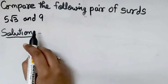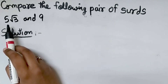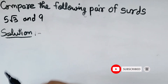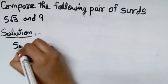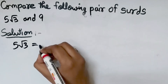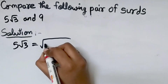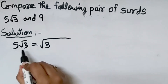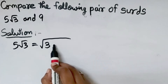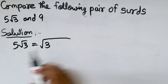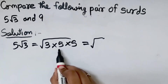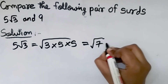Now compare 5 root 3 and 9. Here one side has a square root sign and the other side is a whole number. For 5 root 3, we take the 5 inside the square root: square root of 3 into 5 into 5, which gives square root of 15 into 5, equal to square root of 75.